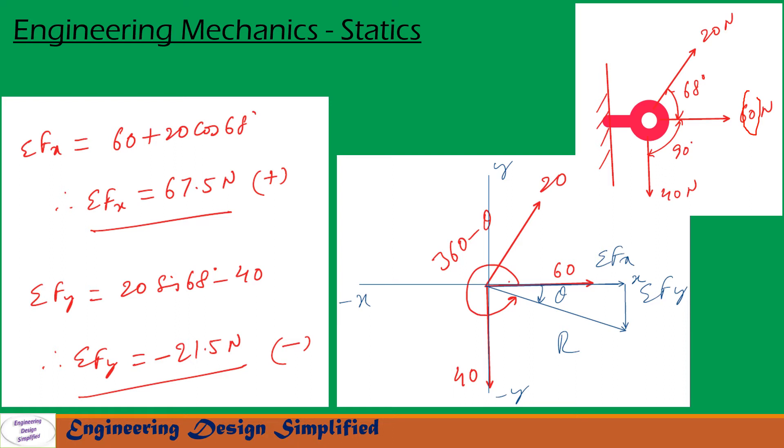So similarly we need to resolve forces along y direction also. So along y direction, we have sigma Fy equal to the vertical component of this force 20 Newton is 20 sin 68 degrees minus 40 Newton. So this force is downwards, so we write minus 40. And this force 60 Newton won't have any vertical component since it is horizontal. So we get sigma Fy equal to minus 21.5 Newton, that is negative.